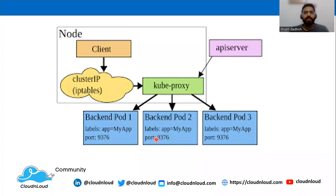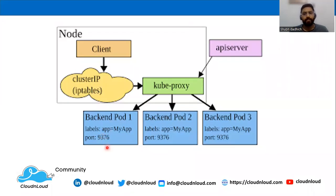Additionally, kube-proxy can also perform simple load balancing across multiple pods. When a service is created in a cluster, it is assigned a unique IP address and port combination. Kube-proxy listens on this IP and port and directs incoming traffic to the correct backend pods based on their service-defined rules.